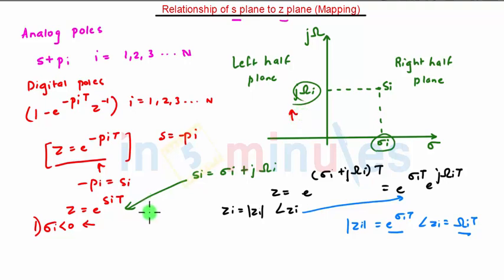In this case, |z_i| < 1. Hence the corresponding digital pole z_i will lie inside the unit circle.